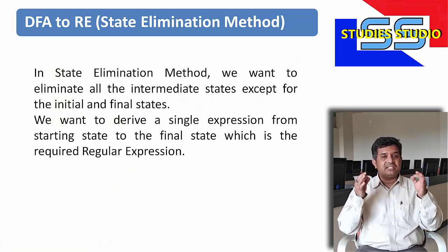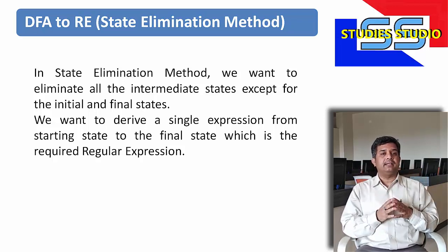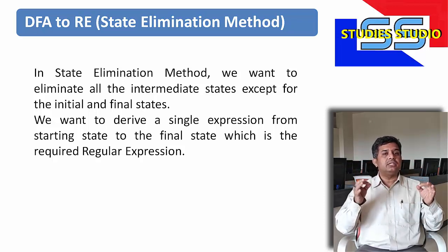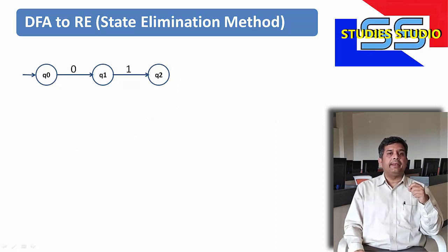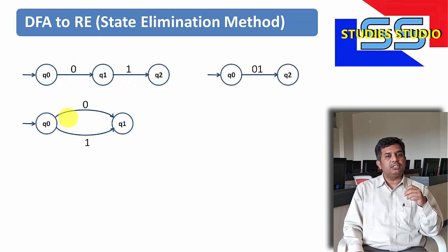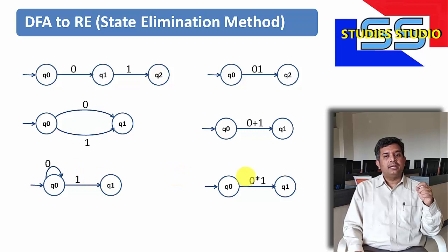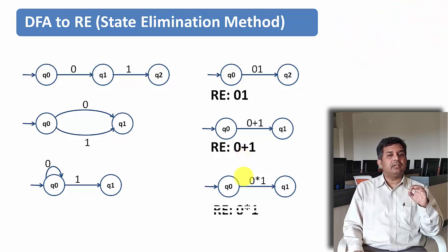In our previous video we have seen that in the state elimination method we want to eliminate all the intermediate states except for the initial and final state, and we want to derive a single expression from the starting state to the final state, which is the required regular expression. If our finite automata is of this form we use concatenation; if it is of this form we use the OR operation; and if it is of this type we use Kleene closure followed by concatenation. So the regular expressions are: 01, 0+1, and 0*1 respectively.